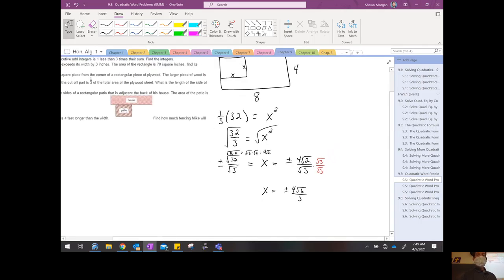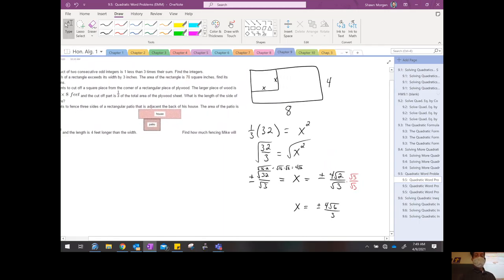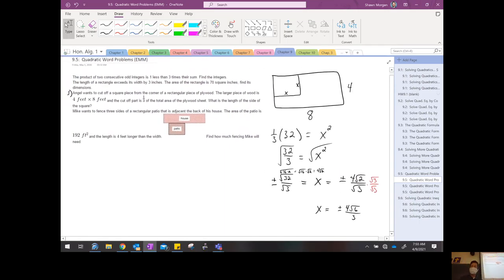Now, that was step 4 of our word problem. What is the fifth and final step here? Answer the question. Answer the question. And the question said, what is the length of the side of the square? And if I've got x equals negative 4 square root of 6 over 3, why is that a bad answer? Because that would be like saying this desk is negative 30 inches across. We don't say the distances are negative. So, we would say that that square has a length of positive 4 square root of 6 over 3 inches in length. Or feet in length, I should say.